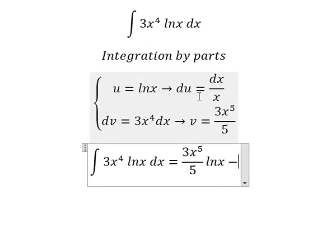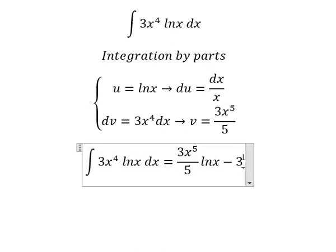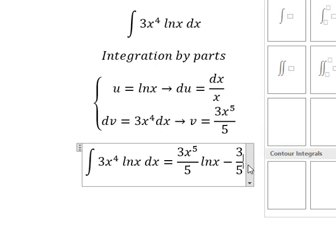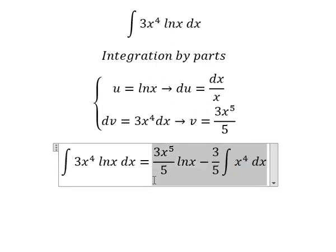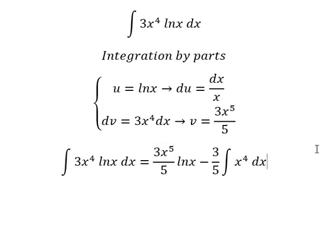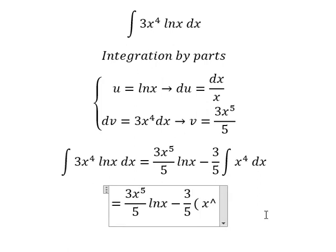Minus the integration of v du. So 3x to the power of 5 over 5 times dx over x, which simplifies to x to the power of 4.